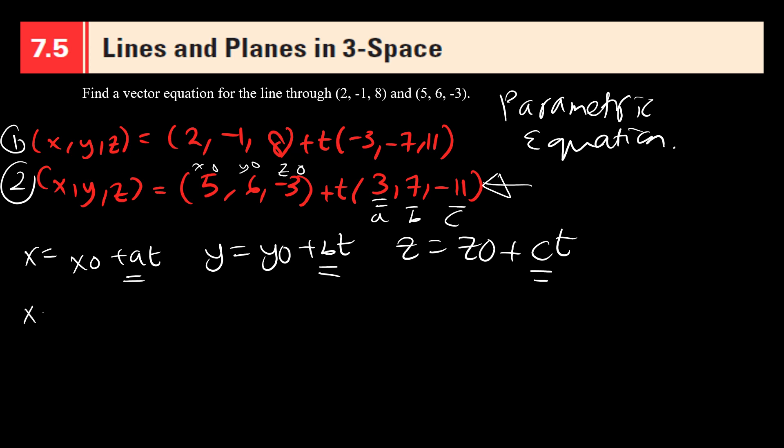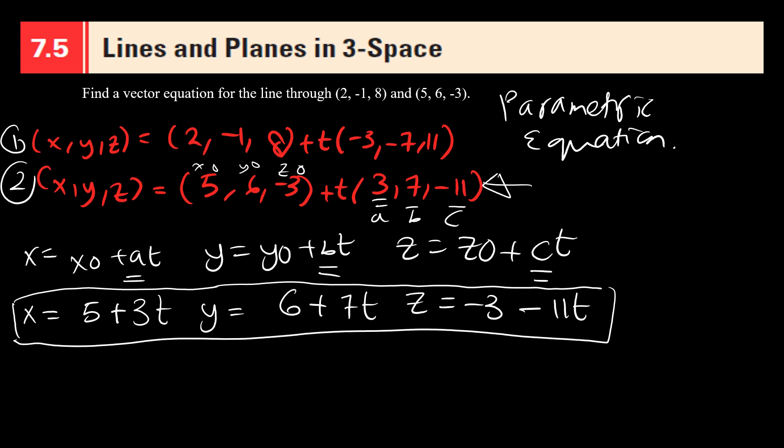Now when I have X0, Y0, Z0 and A, B, C, now it's just plugging into the formula. So the parametric equation for this problem is: X equals 5 plus 3T, Y equals 6 plus 7T, and Z equals -3 minus 11T. So this is my parametric equation. Wasn't it simple?